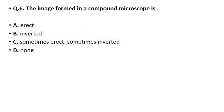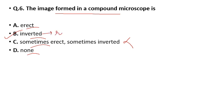Question number 6: The image formed in a compound microscope — erect, inverted, sometimes erect sometimes inverted, or none? Such a thing doesn't happen that something is sometimes inverted and sometimes erect. The correct answer is option B — inverted. As I told you before, what is inverted will always be real. So if real were also an option, it would also be correct.